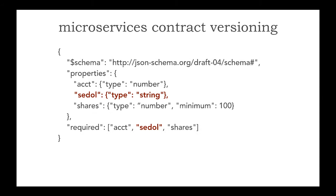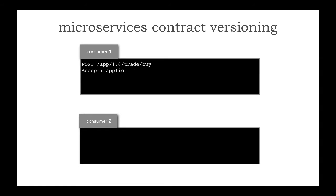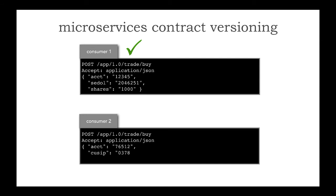I'm going to make one change. Instead of the QCIP, I would like to trade specifying a CDOL number instead. Notice I replaced in the new contract — right here in the JSON schema — instead of QCIP, I put CDOL there, and I made it required. Now let's place two trades. The first trade uses the CDOL 2046251, which is still Apple, and that works perfectly fine. But the second consumer, not knowing about this change, uses the same endpoint but still uses a QCIP, and that will fail.